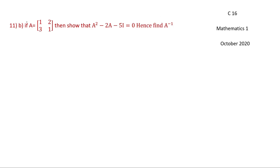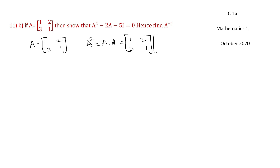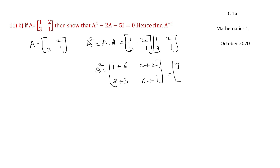11b: if A equals [1, 2; 3, 1], show that A squared minus 2A minus 5I equals 0 and find A inverse. We compute A squared equals A into A, that is [1,2;3,1] into [1,2;3,1]. A squared equals [1+6, 2+2; 3+3, 6+1] equals [7, 4; 6, 7].